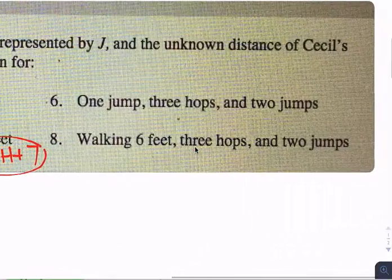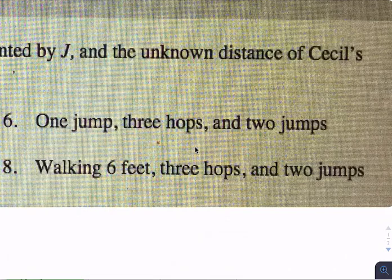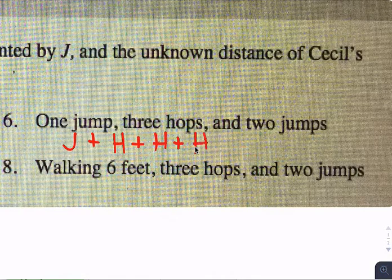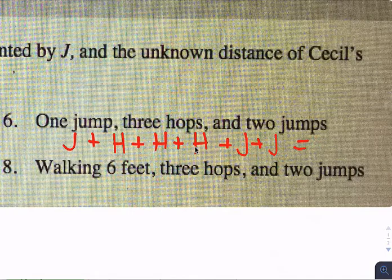Number six. One jump, three hops, and two jumps. One jump is J. Three hops is H plus H plus H. And two jumps would be J plus J. Which, if we combine all those J's and H's, we have three J and three H's.